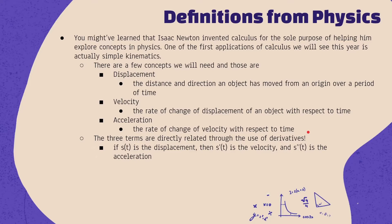If you took grade 11 or grade 12 physics, you probably talked about average and instantaneous velocity and acceleration and how you could determine those using kinematic equations. Isaac Newton actually came up with calculus to help him solve very difficult physics problems, because back then they didn't know enough math to describe the situations we face in everyday life.